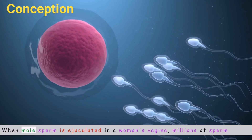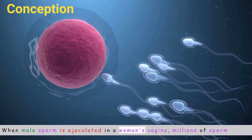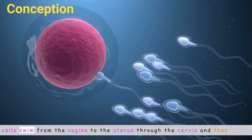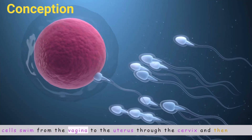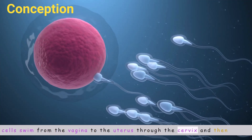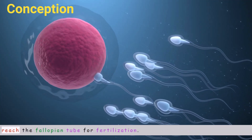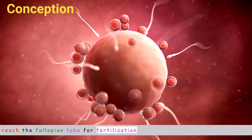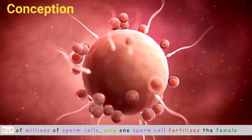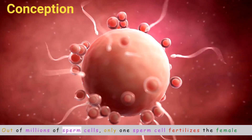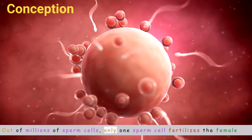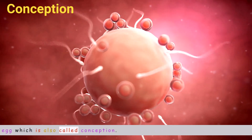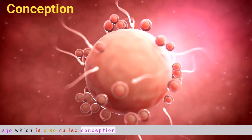When male sperm is ejaculated in a woman's vagina, millions of sperm cells swim from the vagina to the uterus through the cervix and then reach the fallopian tube for fertilization. Out of millions of sperm cells, only one sperm cell fertilizes the female egg, which is also called conception.